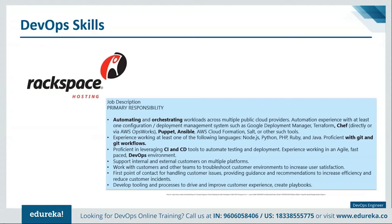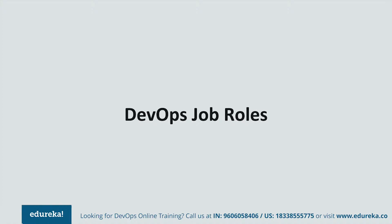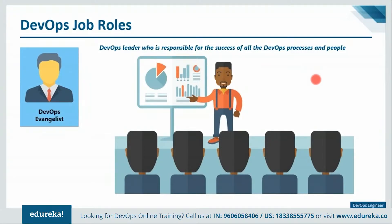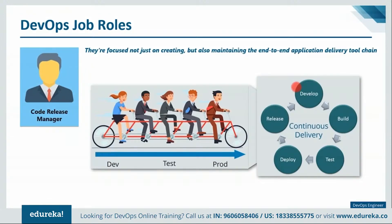Now let's look at the various job roles in DevOps you can apply for. The DevOps evangelist is basically a leader — a person who owns and delivers organizational change toward DevOps practices. The code release manager, also called release engineer or product stability manager, manages and coordinates the product from development through production, overseeing the integration and flow of development, testing, and deployment to support continuous delivery and maintaining the end-to-end application delivery tool chain.